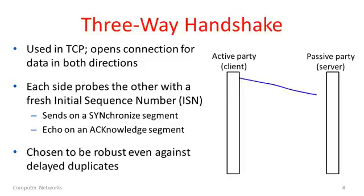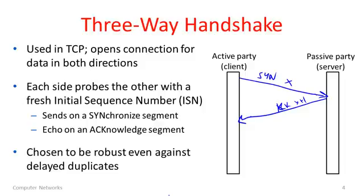Here are the segments that would be exchanged. First the client will send a SYN — that's short for synchronize — a SYN segment, and it will pick its initial sequence number; we'll call it x. Next the server will reply with an ACK. It will ACK x plus 1, because the SYN is considered to take up one byte of sequence number space.